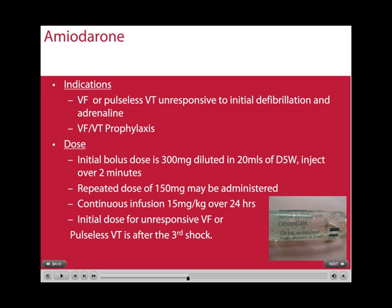The indications for amiodarone are for VF or pulseless VT unresponsive to initial defibrillations and adrenaline. The initial bolus dose is 300mg diluted in 20ml of 5% glucose, injected over a 2-minute period. If it seems to be helping, repeated doses of 150mg may be administered, and a continuous infusion of 15mg per kilogram over 24 hours can be started. The initial dose is given after the third shock.